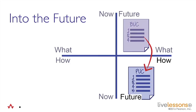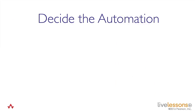This is getting into the future — we're coming down below the horizontal line. We're talking about how. This is the brown cow model that we've been showing you throughout the various sessions, and we're talking about the future how — in other words, the technological solution that we're going to be using. Deciding the automation that we're using in this piece of work.